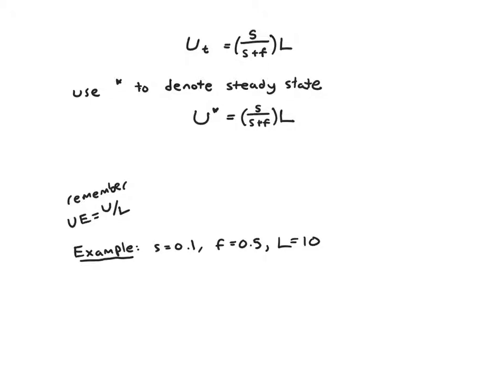This tells us u in steady state equals s/(s+f) times L. There's one more equation we'd like to get. Remember that the unemployment rate equals u over L. So a lot of the time people like to rearrange this a bit more and say the UE rate in steady state equals u*/L, which is based on the equation above, just s/(s+f).